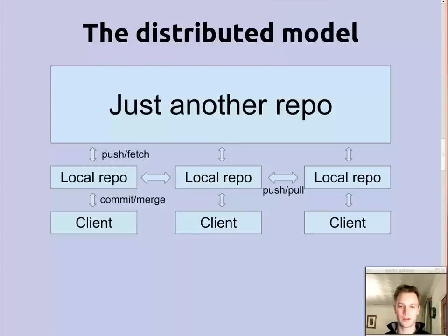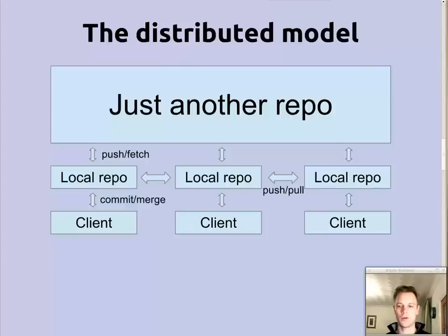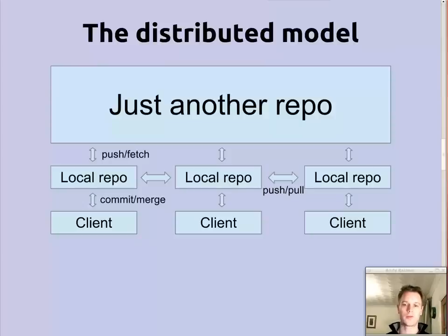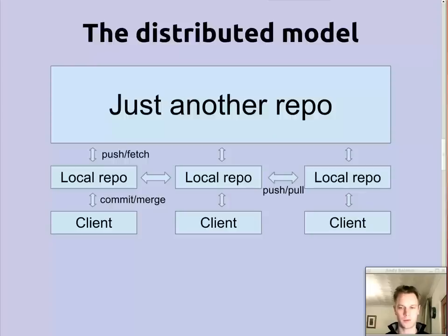The key thing here is that everyone's on an equal footing. You can push and pull stuff to and from someone else's repository. You can have another repository that a few of you are using, and then when you're all ready, push it to the real big centralized repository or anywhere else you want to. So you get a lot more freedom, but the situation is a little bit more complex — and that's what you pay for your extra freedom.